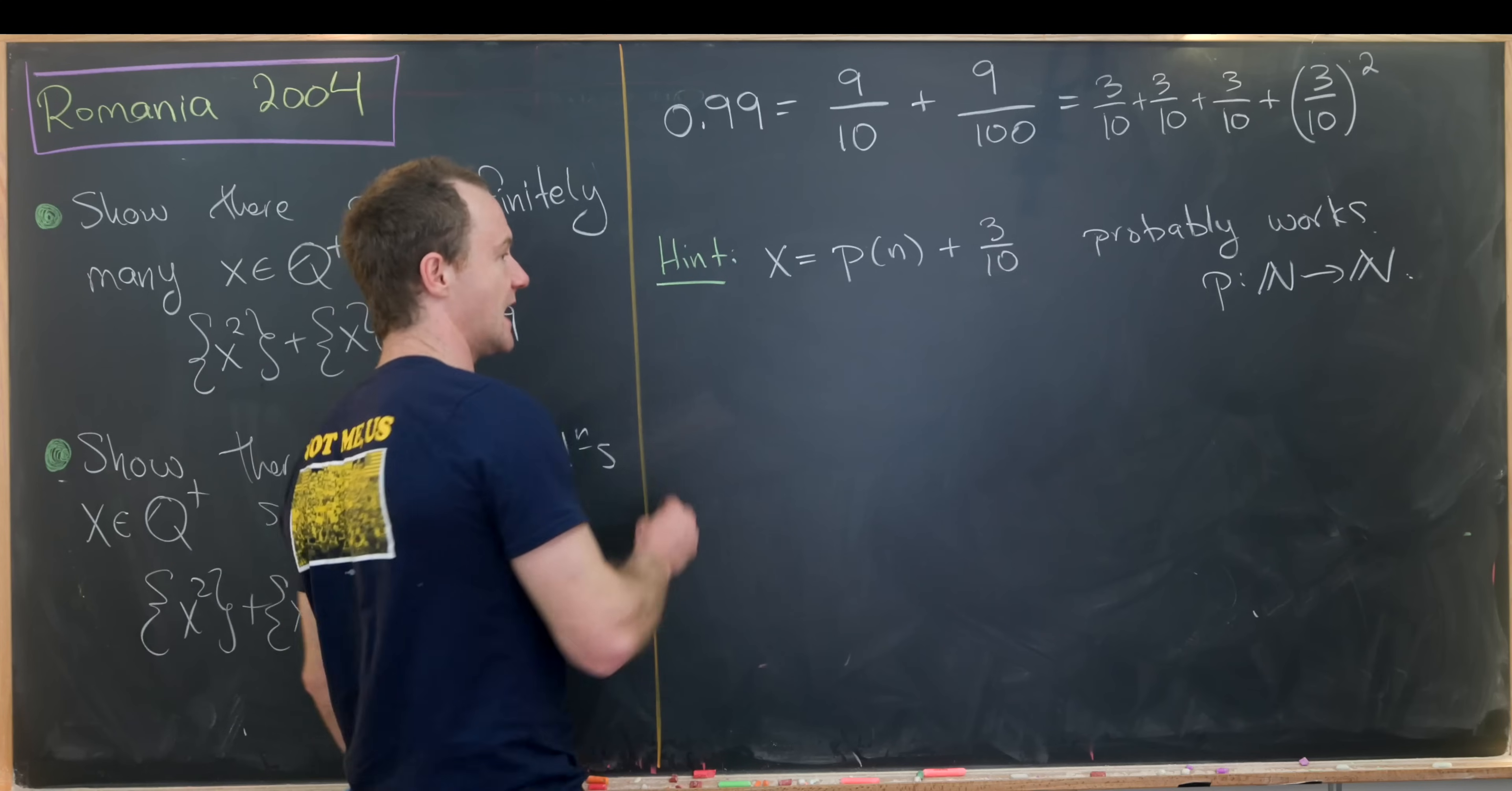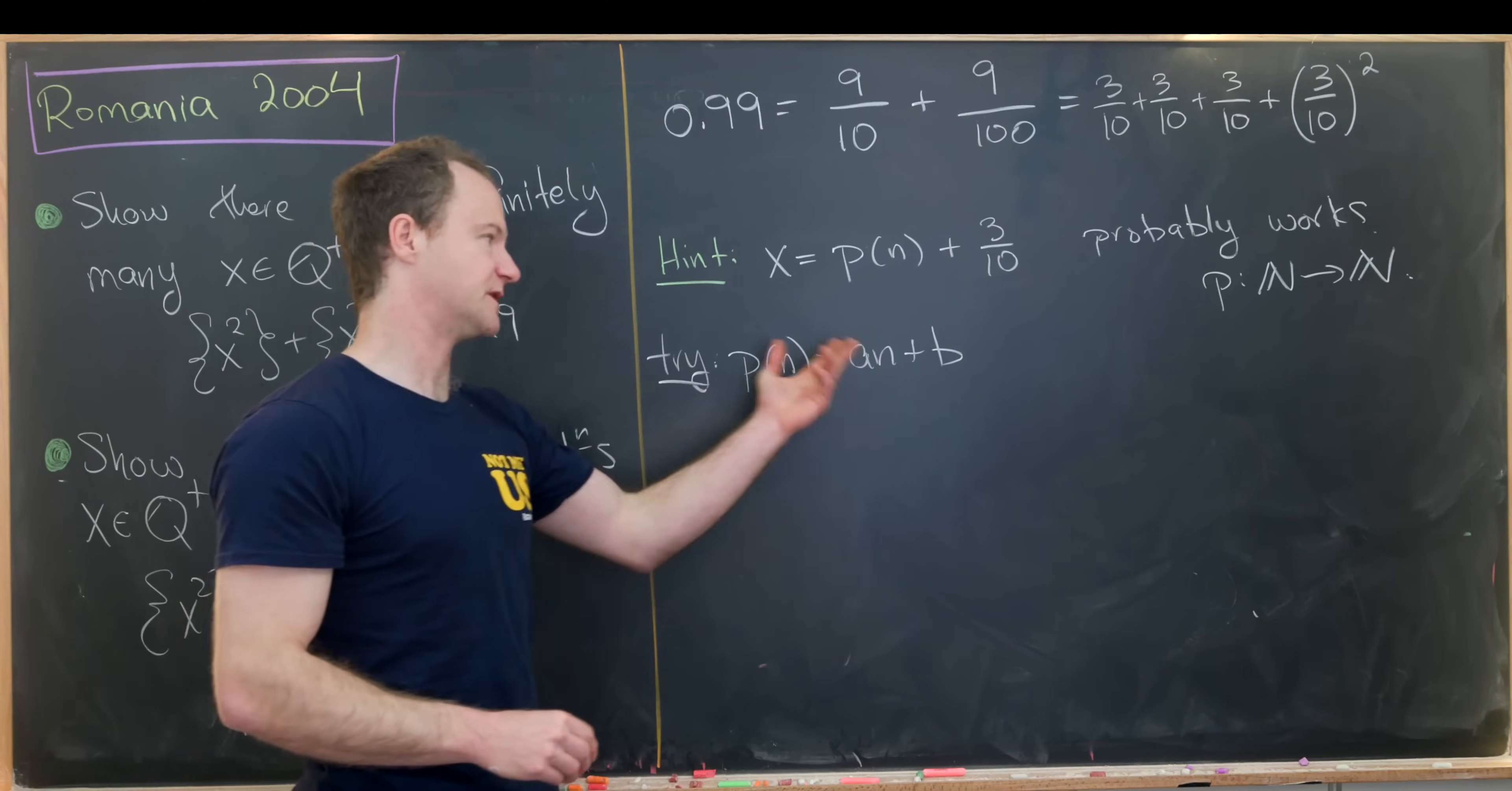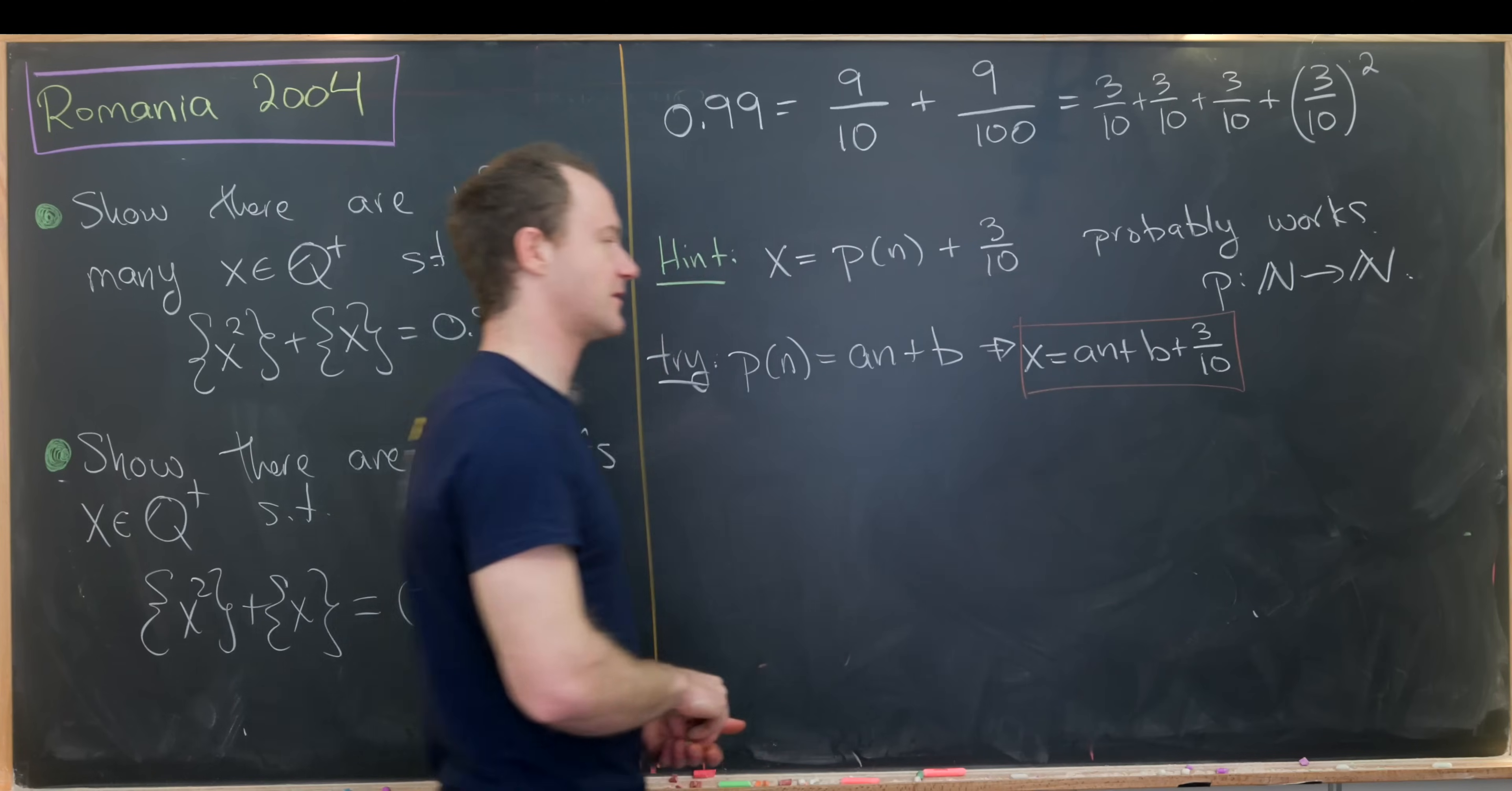Let's try the simplest p of n that allows for infinitely many solutions, and that would be a linear function. So we would say p of n equals a times n plus b. Notice it couldn't be a constant function because then we'd only have one solution. So this is the next best thing. If this doesn't work we'd maybe push it higher, but I think this will work. So that means we have x equals an plus b plus 3 by 10. That's kind of our test shape for this number x.